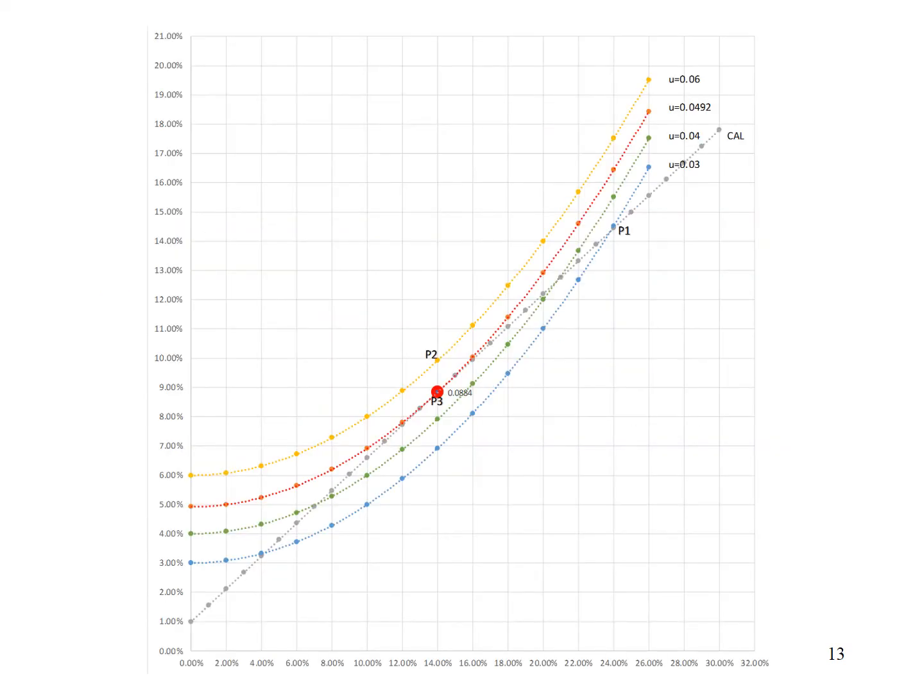Let's analyze the various points on the graph further. Point P1 is not optimal. A given increase in risk is compensated by an increase in expected return that is too small for the investor. Take a look at the blue line. The utility achieved by investor is 0.03, which is lower than the utility of the two indifference curves above it.